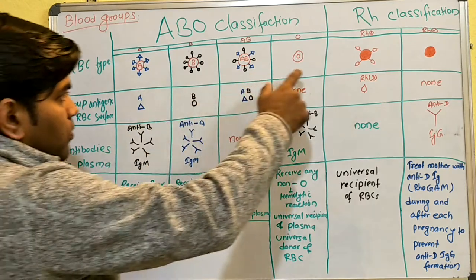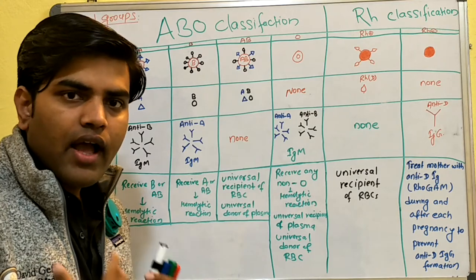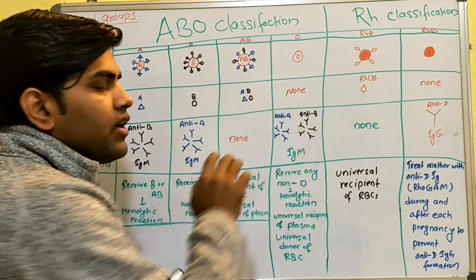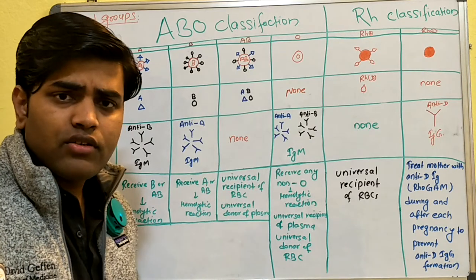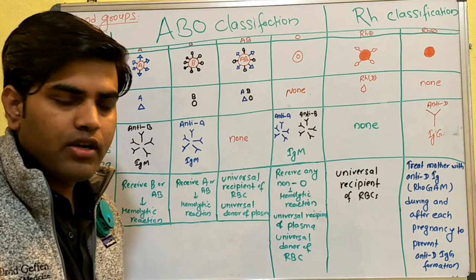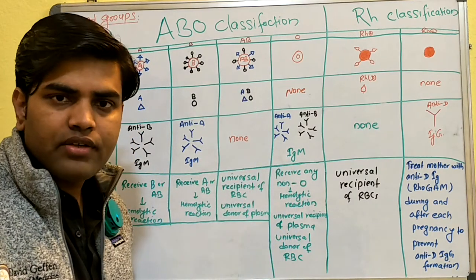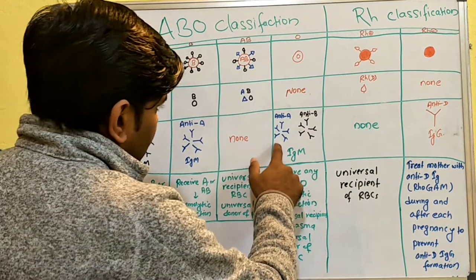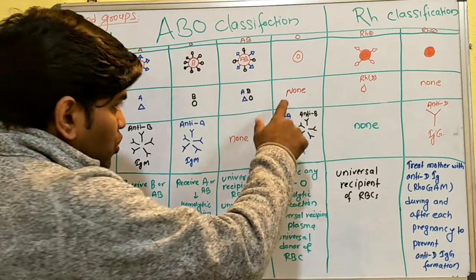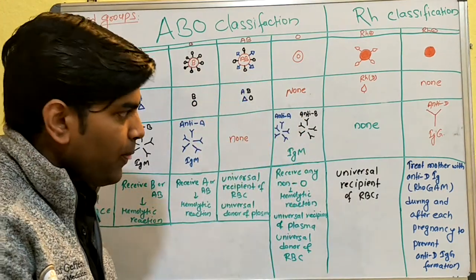For blood group O: there is no surface antigen on the RBC. Since there is no antigen, the body can afford to have any antibody. The gut flora will make both anti-A and anti-B, so both antibodies will be present in the plasma of an O blood group person.